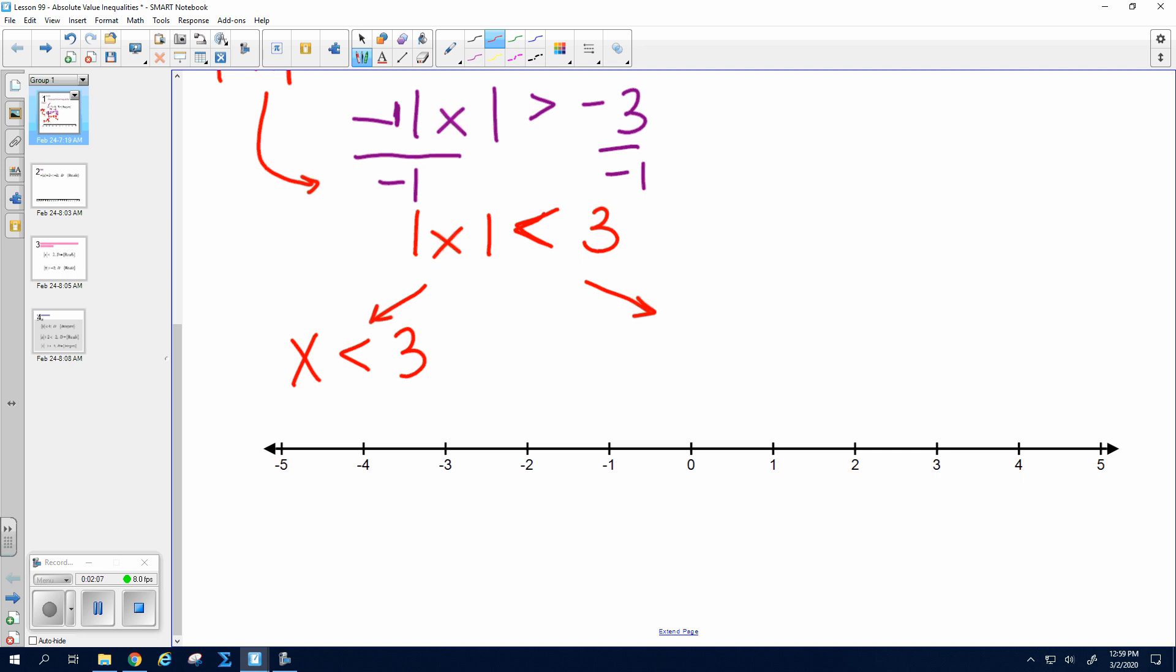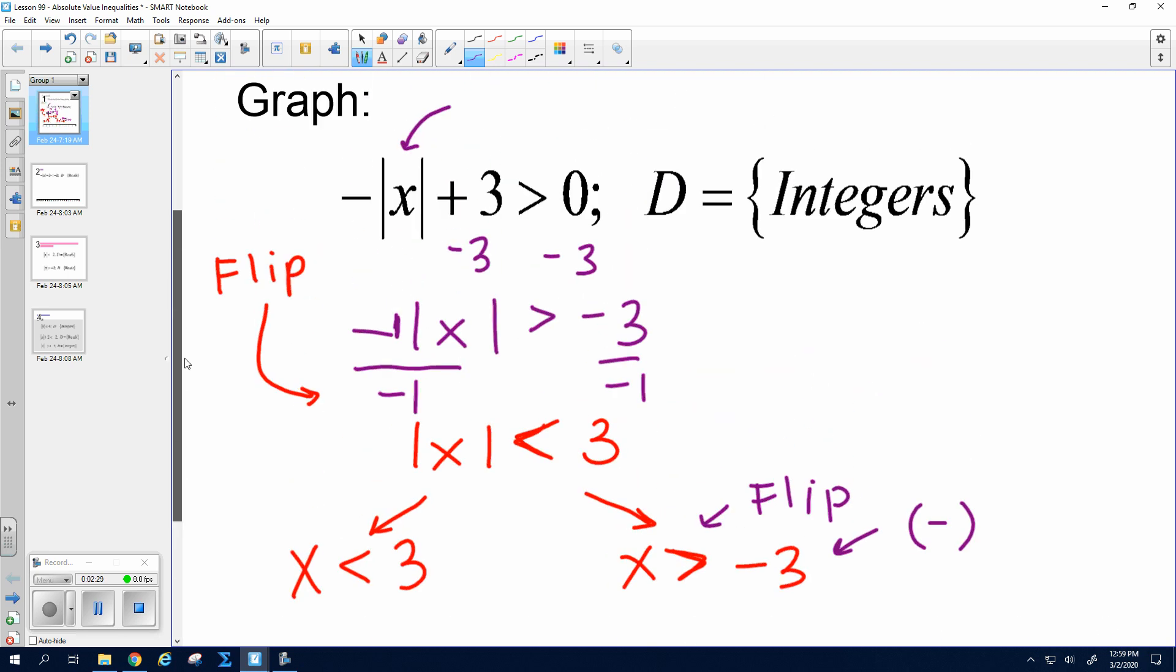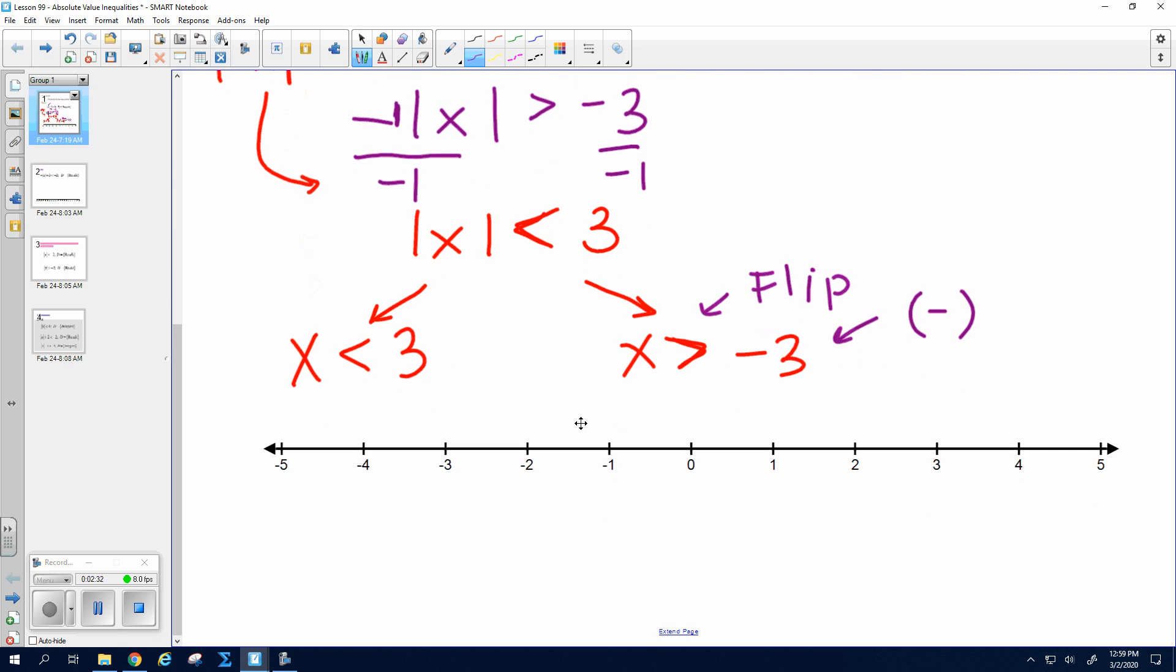Okay. So x is less than 3. And on the other one, you have to flip the inequality sign. So it says less than. Now I do greater than, and I make this a negative 3. So I flipped only on the negative one. All right, so I want values less than 3 and greater than negative 3. And my domain is integers. So if I'm less than 3, that would be 2, 1, and 0. And if I'm greater than negative 3, that would be negative 2 and negative 1 and 0, etc.